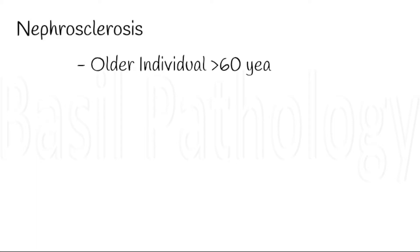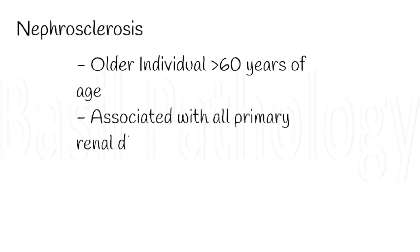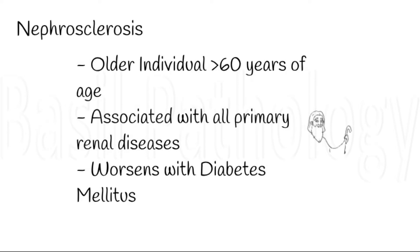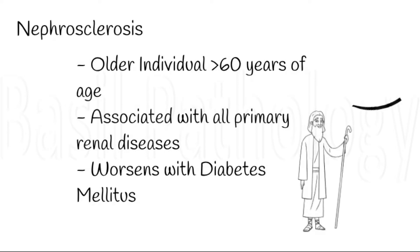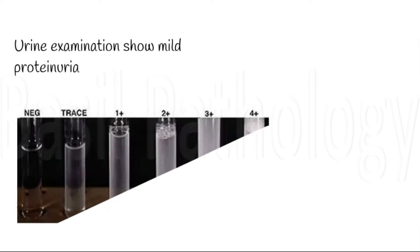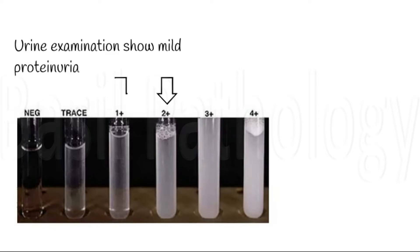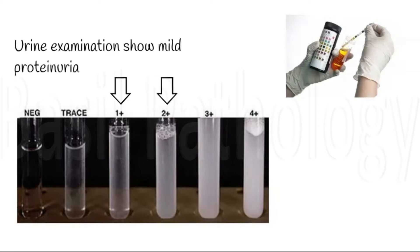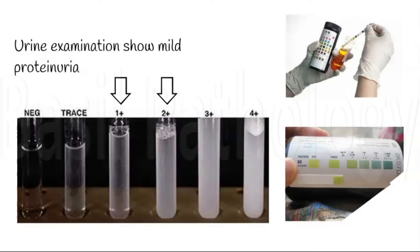Nephrosclerosis is usually seen in elderly individuals aged more than 60 years, and also in association with all primary renal diseases, worsened with diabetes mellitus. On urine examination, urine volume will be less than 500 ml per day, that is oliguria, and chemical examination shows mild proteinuria, that is 1+ or 2+ proteinuria.